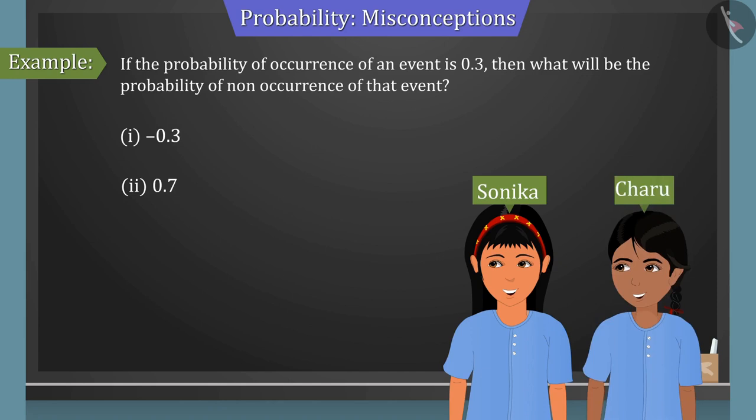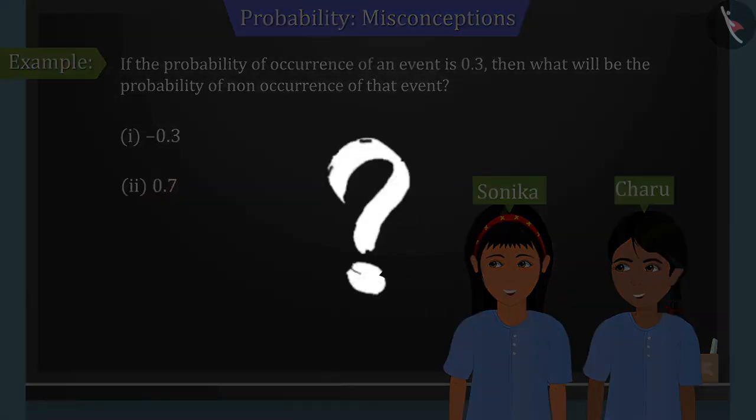Sonika and Charu select options 1 and 2 respectively. Minus 0.3, 0.7. Can you tell whose answer is correct and why?